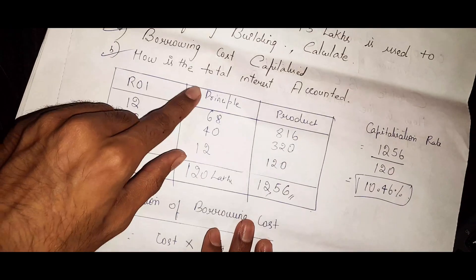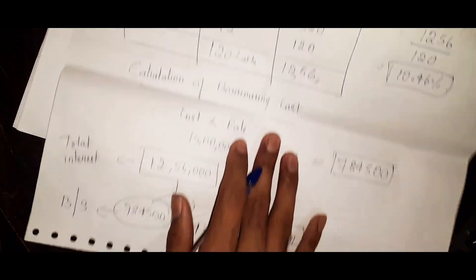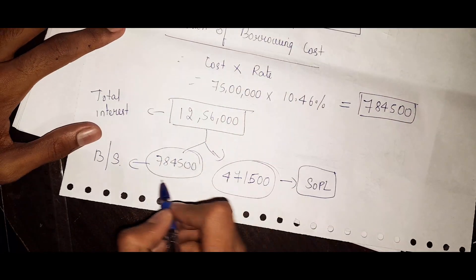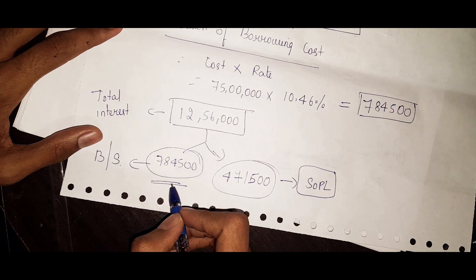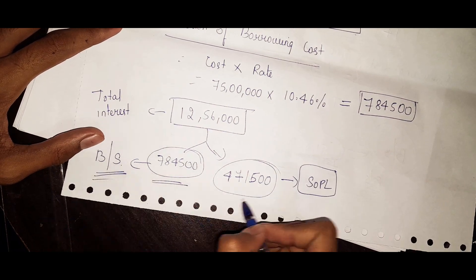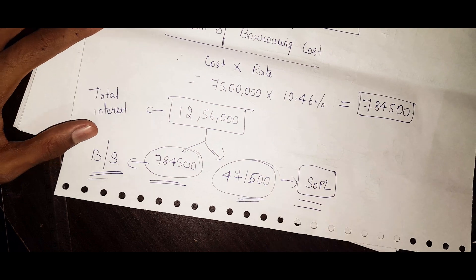This will be shown in statement of profit and loss account. That is what they mean by how is the total interest accounted: by making whatever the borrowing cost capitalized shown in balance sheet, the remaining amount will be shown in SOPL.